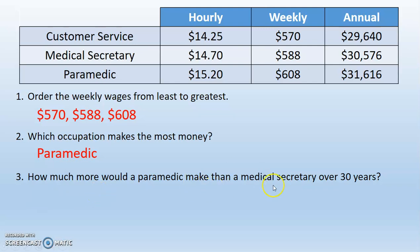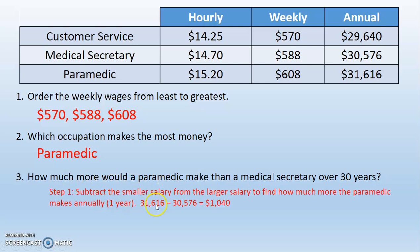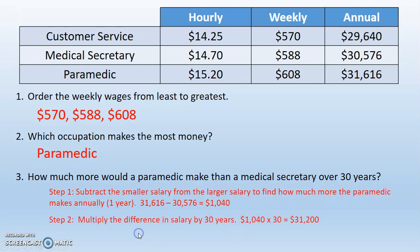How much more would a paramedic make than a medical secretary over 30 years? I see the word years — remember, annual means one year, so I'm looking at the annual salaries. How much more means to subtract. First, subtract the smaller salary from the larger salary to find how much more the paramedic makes annually — that's $1,040. Now multiply that difference by 30 to get 30 years, and that gives $31,200.